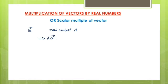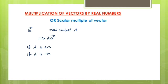Here, lambda is a real number. If lambda is positive, the lambda-a vector will be in the same direction as the given vector a. If lambda is negative, the lambda-a vector will be in the opposite direction of the given vector a.